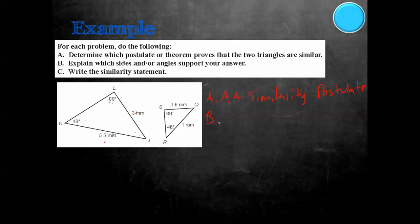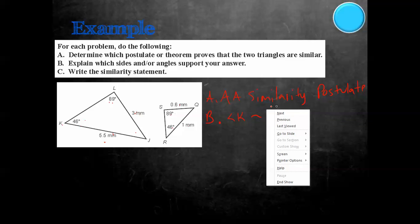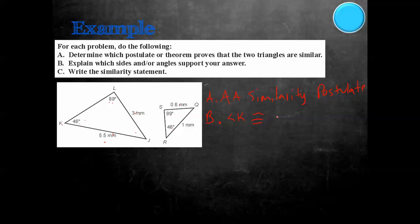For part B, angle K is congruent to angle R, and angle L is congruent to angle S. Since we have those two congruent angles, we have angle-angle. Therefore, triangle JKL is similar to triangle QRS — starting with the vertex opposite no angle, then 46, then 89. Remember: congruent means equal in measure, which is why we write the equal sign with a squiggle above it. Similar just means same shape, different size — written with just the squiggle line.